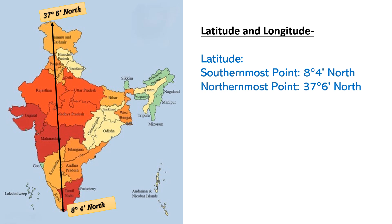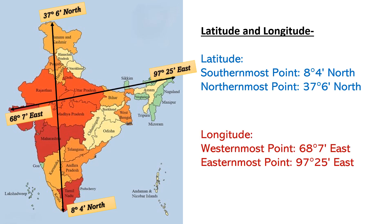If we talk about India's coordinates, the mainland of India extends between the latitudes of 8 degrees 4 minutes north and 37 degrees 6 minutes north. This is the extent of India's mainland from its southernmost point to its northernmost tip. And from west to east, India extends between 68 degrees 7 minutes east and 97 degrees 25 minutes east.